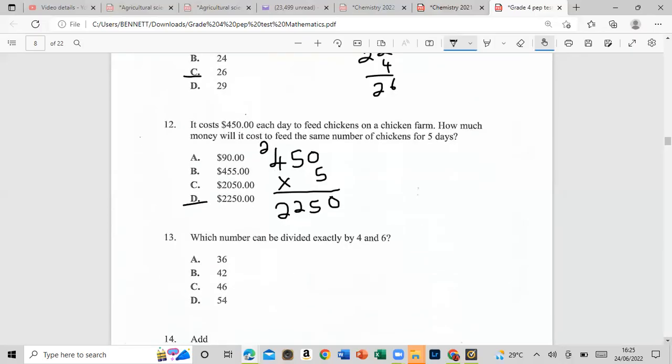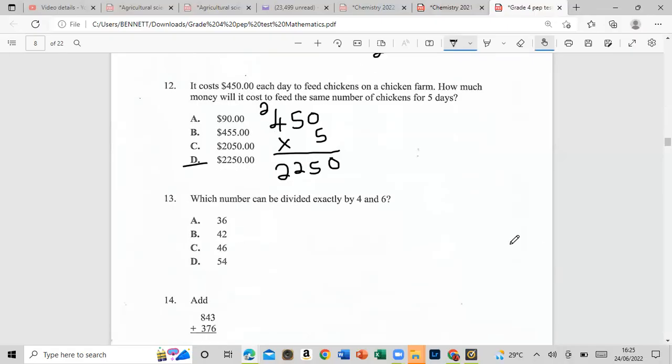Which number can be divided exactly by four and six? So which of these numbers can both four and six go into without a remainder? One way you could do it is keep adding four each time: 4, 8, 12, 16, 20, 24, 28, 32, 36. And for six: 6, 12, 18, 24, 30, 36. Now the fact that 36 comes up in both, it will be 36. That's what they're asking for, what is the lowest common multiple of four and six, which is 36.